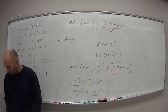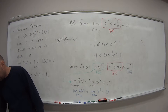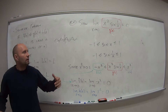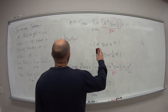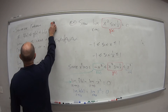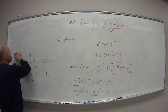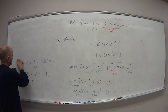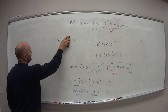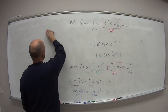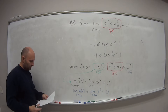So there we go. That's how we can use the squeeze theorem to find the limit of a function that otherwise might be pretty messy. But if we can find two functions on either side of it and find those limits, and if they end up being the same thing, it does the work for us.